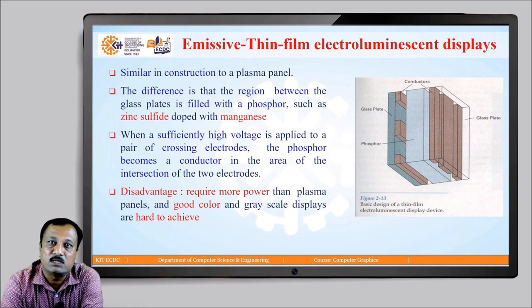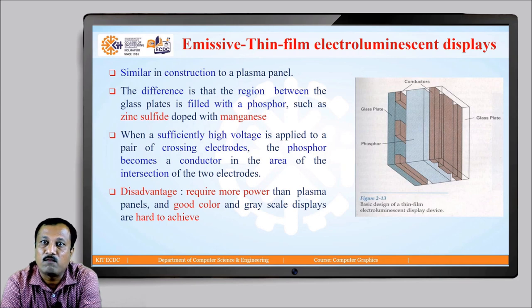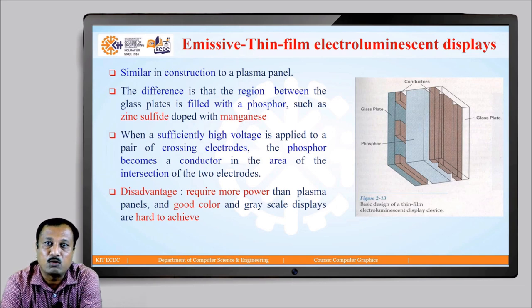Another display device using emissive technology is the thin film electroluminescent display device. It has a structure similar to the plasma panel display device. The difference is that the region between the glass plates is filled with phosphor, such as zinc sulfide doped with manganese, instead of gases. When a sufficiently high voltage is applied to a pair of crossing electrodes, the phosphor becomes a conductor at the area of intersection, producing a visible glowing dot. A disadvantage is that it requires more power compared to the plasma panel display device, and achieving good color or gray scale displays is difficult.